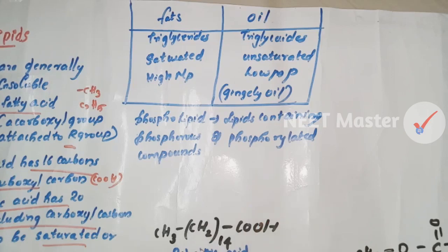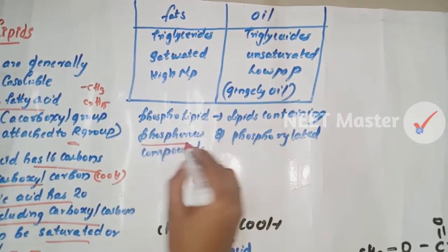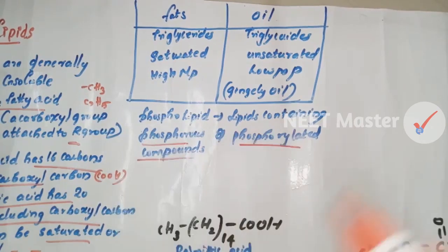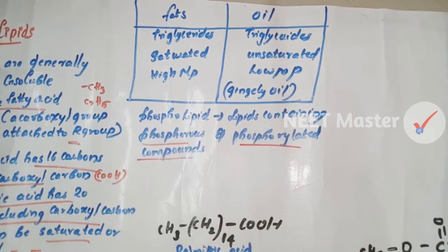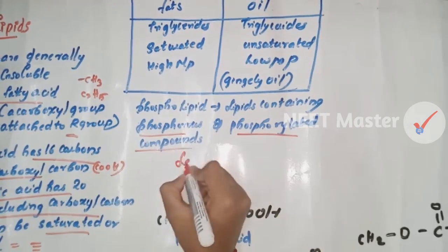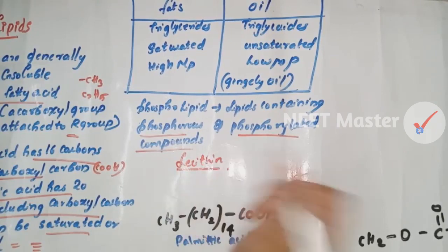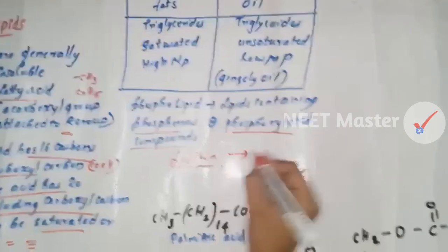What about phospholipids? If you think about phospholipids, lipids contain phosphorous and phosphorylated compounds. These phosphorylated compounds are called phospholipids, and they are found in the cell membrane. An example of a phospholipid is lecithin, which is found in the cell membrane.